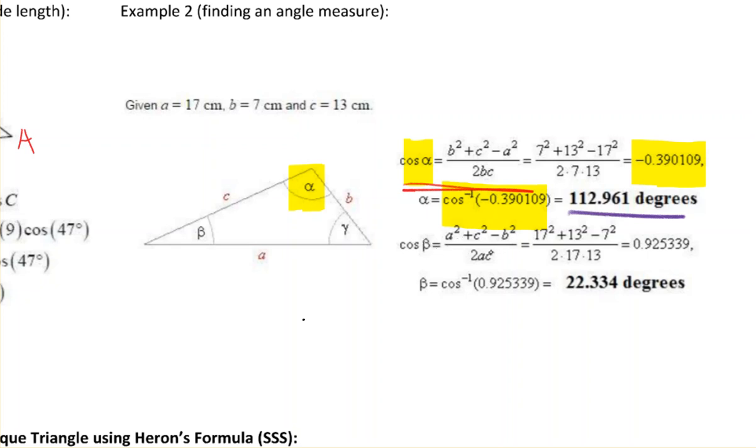Okay, different angle, slightly different formulas. Numbers are slightly plugged in differently. That's what the cosine of beta would be. So inverse cosine of that is what angle beta would be.